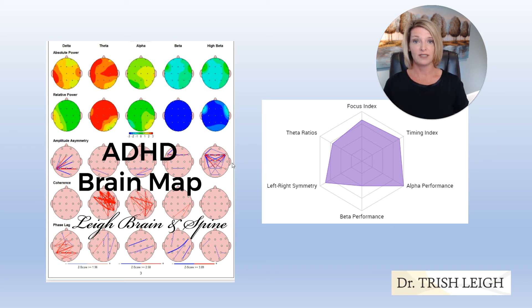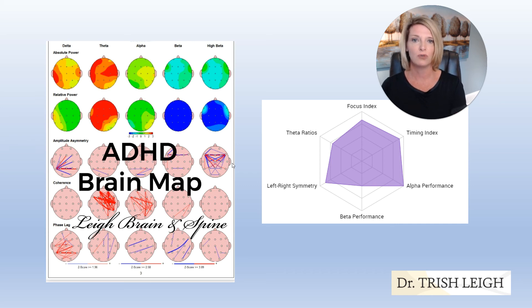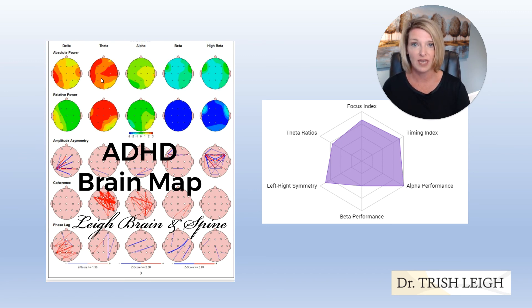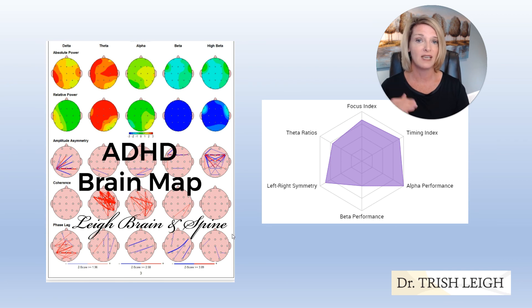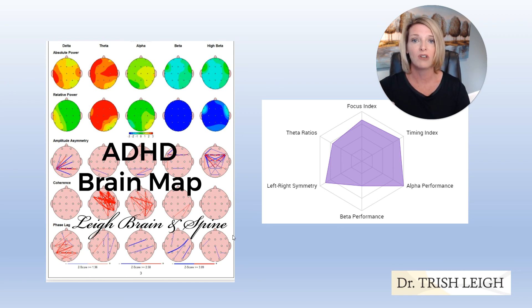That is what creates ADHD and why the symptoms exist — the brain is going too slow in the first place. Once you see it with your own eyes and confirm you have the ADHD brain map pattern, we know scientifically that neurofeedback brain training teaches your brain to make less theta and more beta. Over time, you replace this mode with the optimal mode of less theta and more beta, and your thinking, cognition, planning, organization, and focus all come online because there's no more slow speed — the brain is running at the right speed for calm focus.